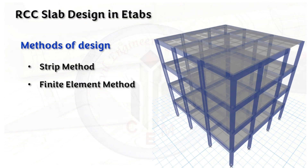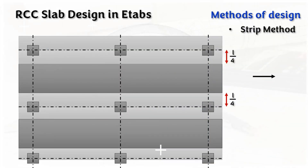There are two methods available: one is the strip method and another one is the finite element method. As the name suggests, in the strip method we need to create strips along the column faces as well as in the middle area of the column, and then proceed the design of the slab. In the finite element method, we divide the larger element into smaller parts called finite elements, and then proceed the design process.